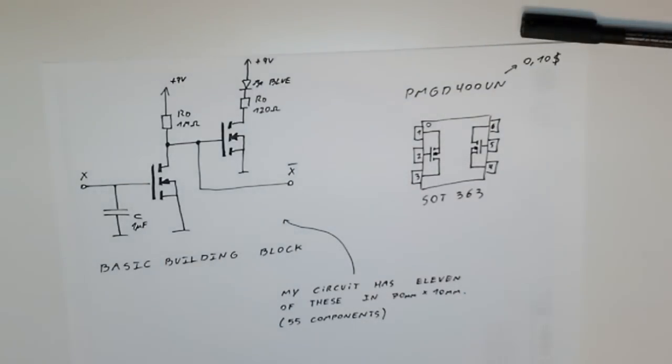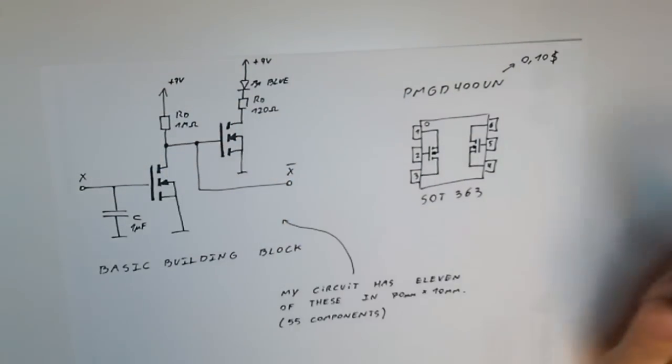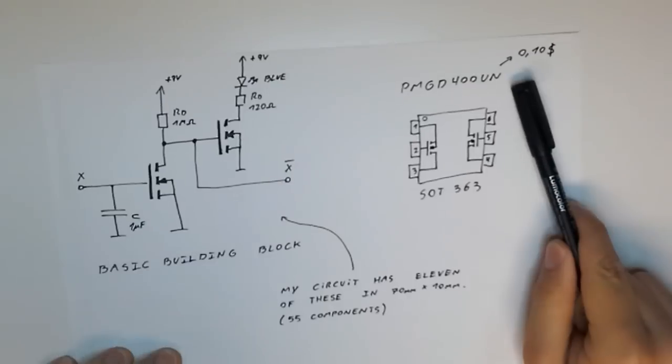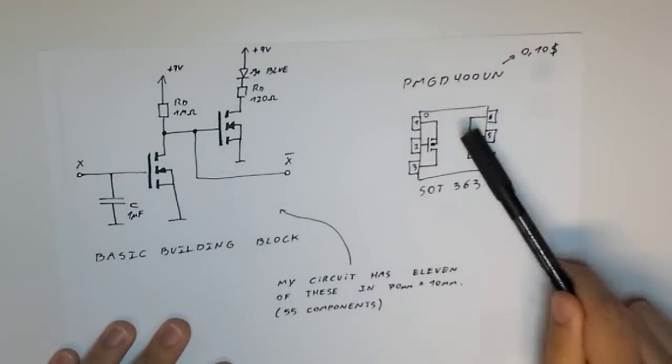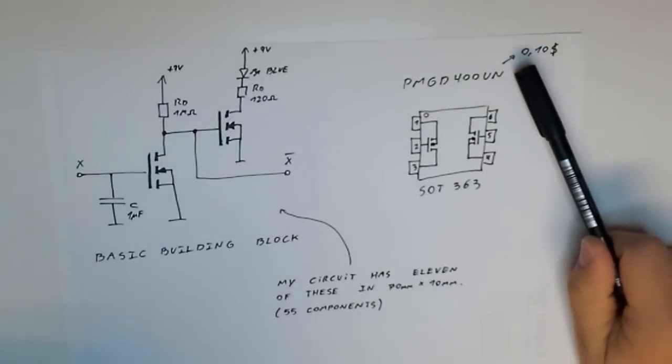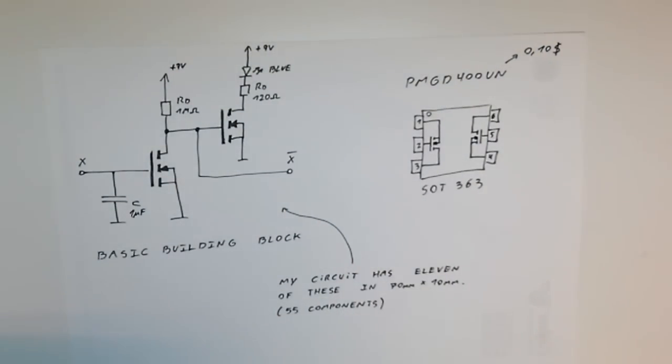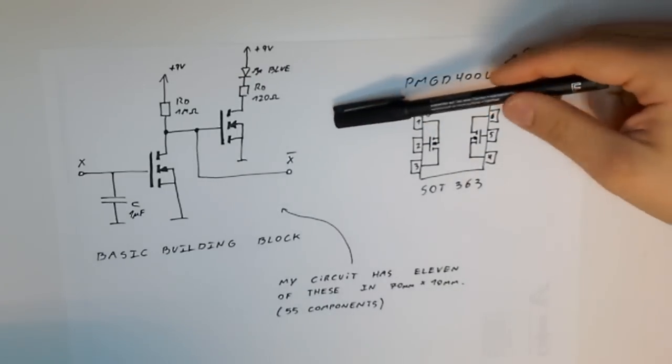Instead of using one package for each of these transistors, I bought these ones. This package has two transistors inside it and it's very cheap as you can see. I thought this was the best way to put the LEDs on my circuit.